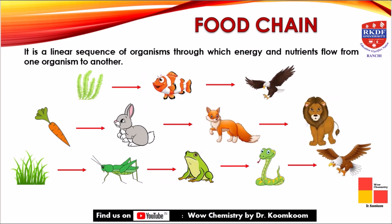Now we will learn about the food chain. A food chain is a linear sequence of organisms through which energy and nutrients flow from one organism to another. For example, in one chain a fish feeds on grass while an eagle feeds on the fish. In another, a rabbit feeds on a carrot, a fox feeds on the rabbit, and a lion feeds on the fox. In a five-component chain, a grasshopper feeds on grass, a frog feeds on the grasshopper, a snake feeds on the frog, and a hawk feeds on the snake.